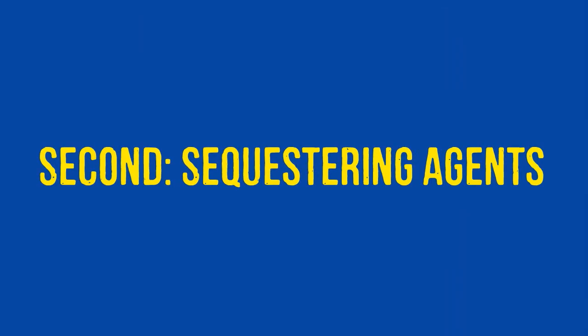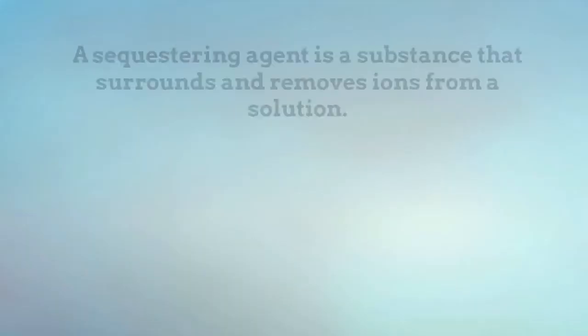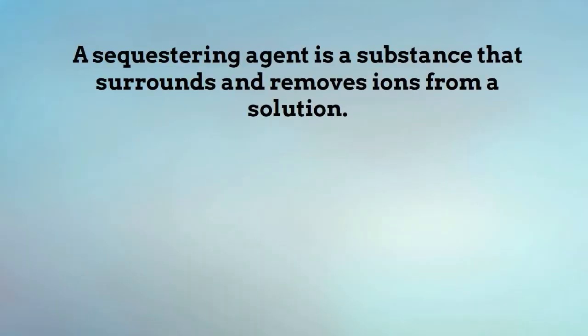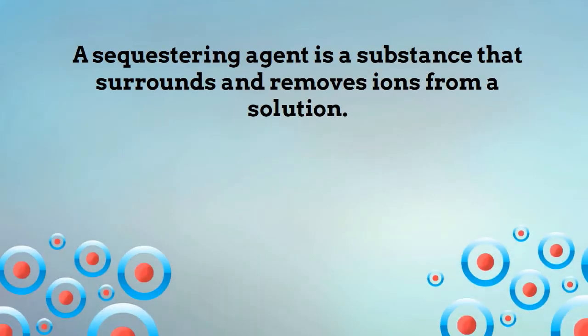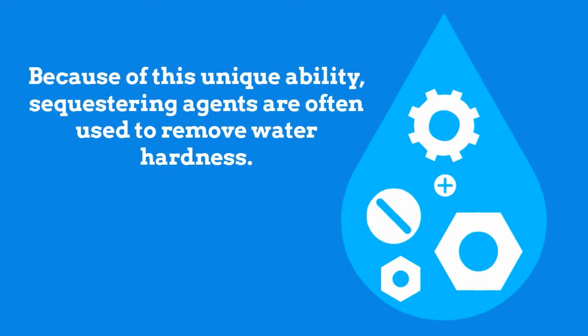Next up, sequestering agents. We can add sequestering agents to increase the detergency of a cleaner. A sequestering agent is a substance that surrounds and removes ions from a solution. Because of this unique ability, sequestering agents are actually often used to remove water hardness.